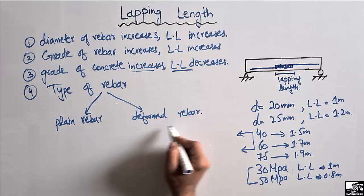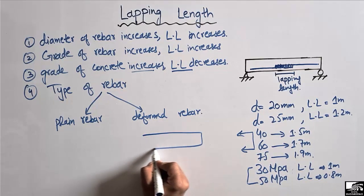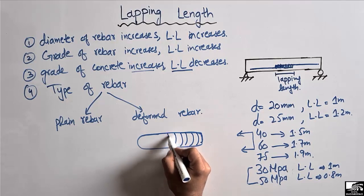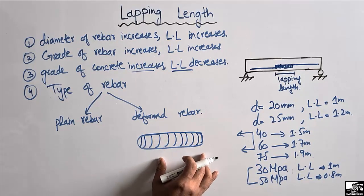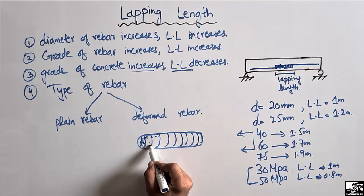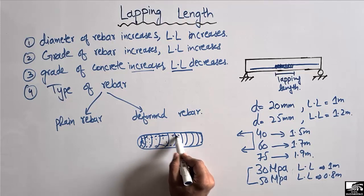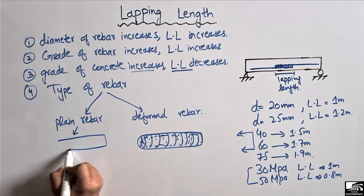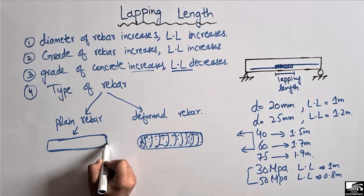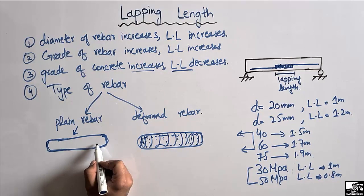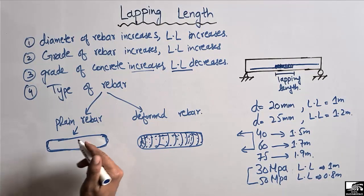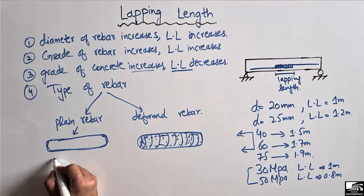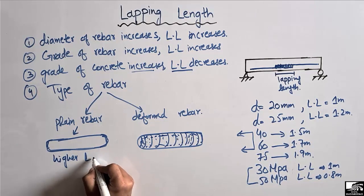In the case of deformed rebar, there are ribs provided on the surface of the steel bar. These ribs increase the friction between the concrete and the steel, resulting in higher bond strength. In the case of plain rebar, there are no such ribs on the surface, so there is less friction and lower bond strength. That is why plain rebar requires a higher lapping length, while deformed rebar, with its high friction and high bond strength, requires a lower lapping length.